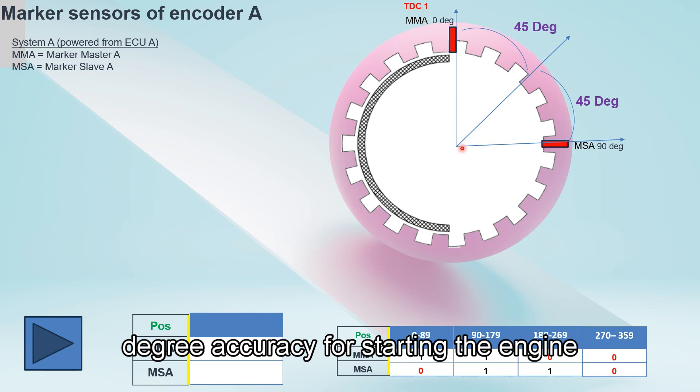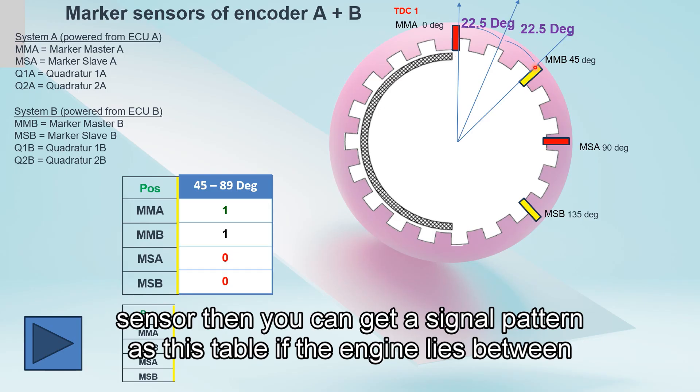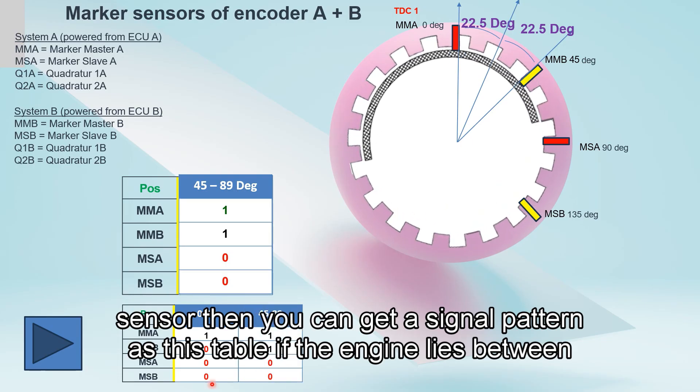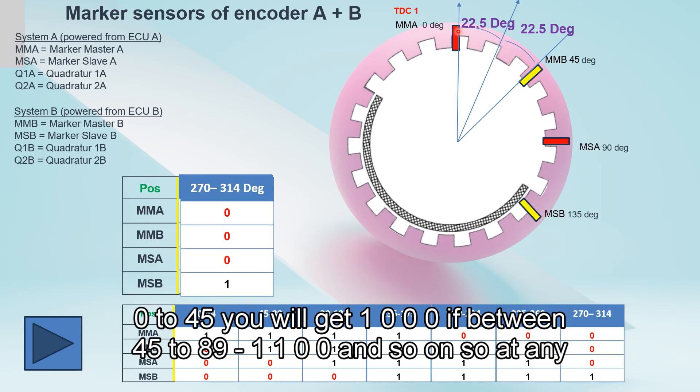By using another couple of sensors which are placed 45 degrees shifted from the first sensor, you can get a signal pattern like this. If the engine lies between 0 to 45 degrees, one pattern; if between 45 to 81 degrees, another pattern.